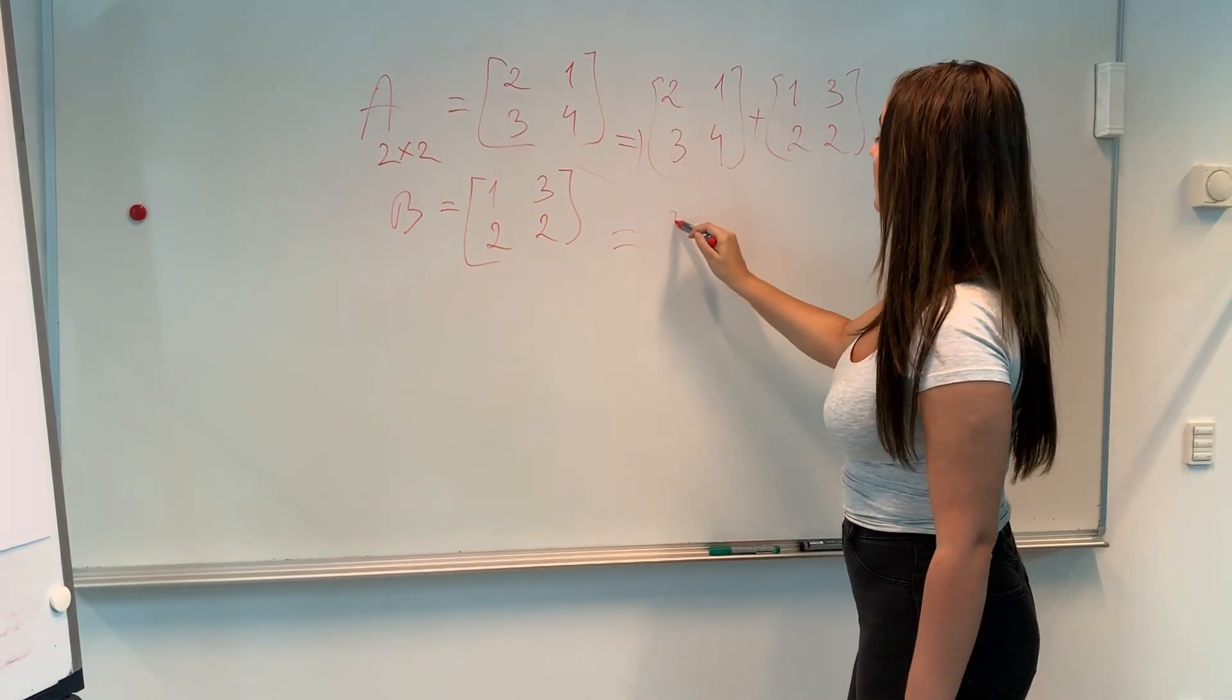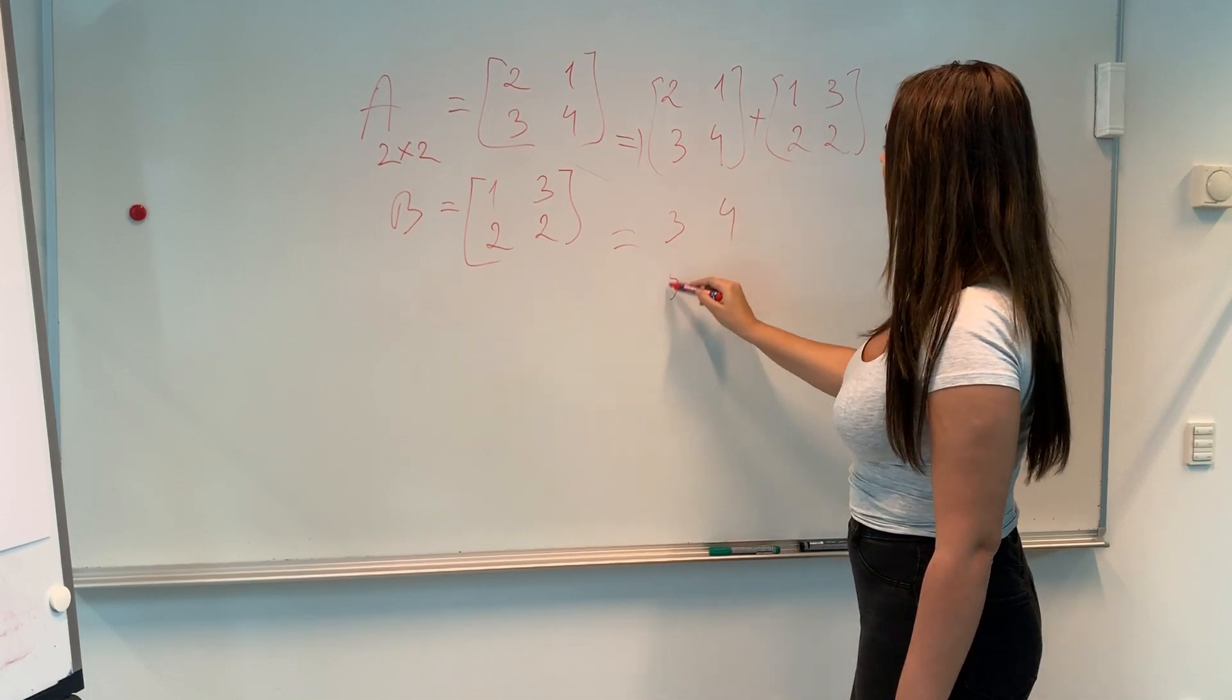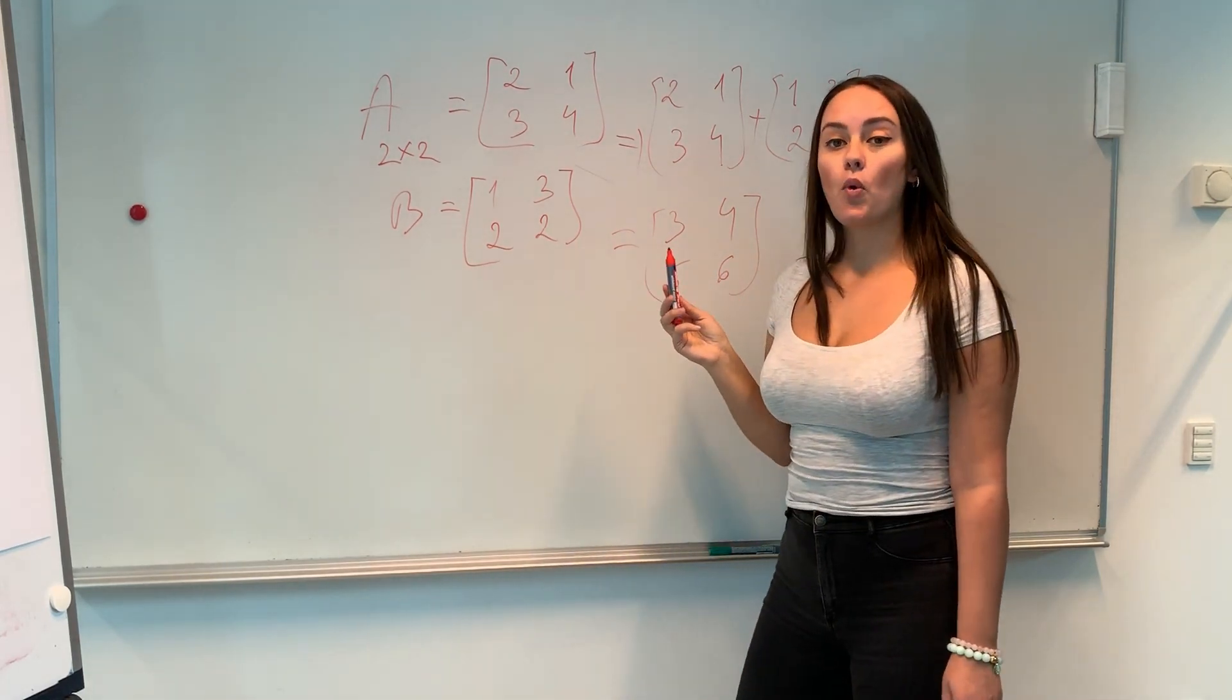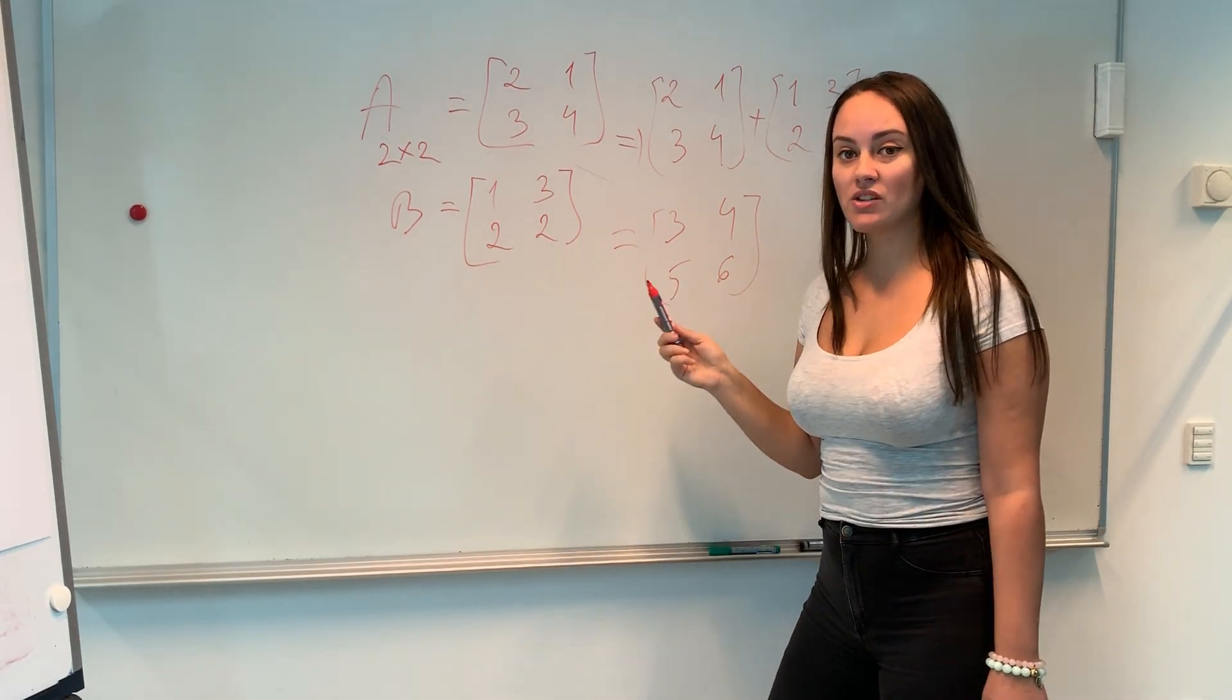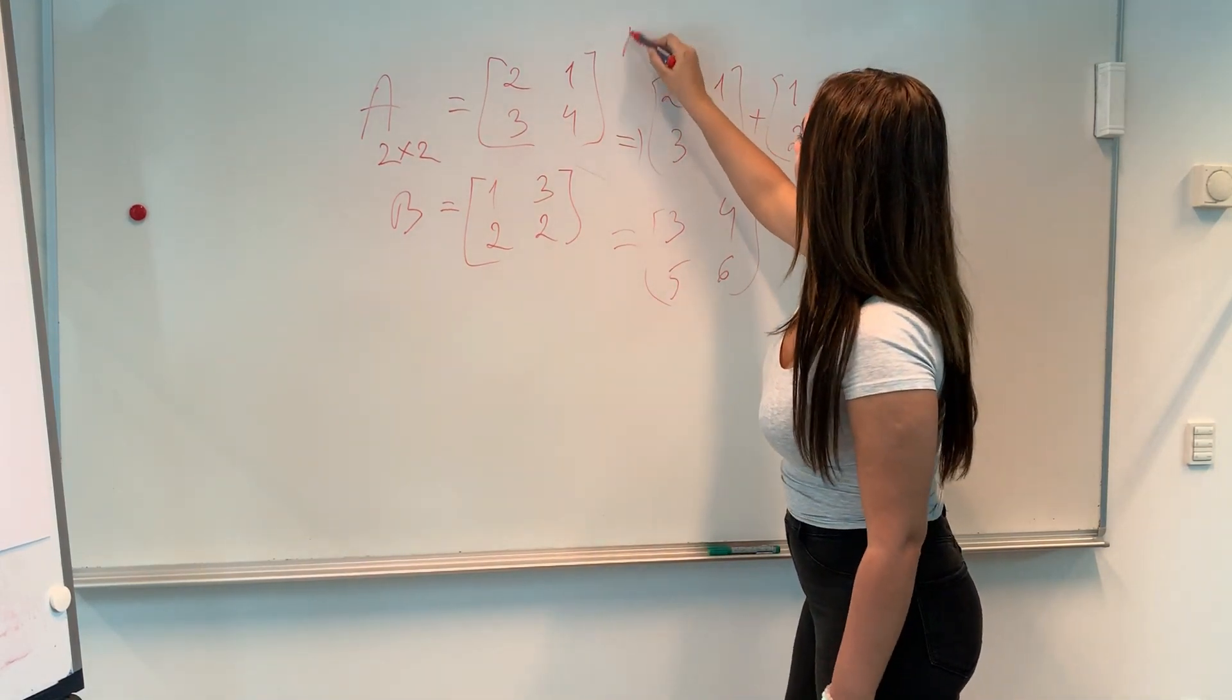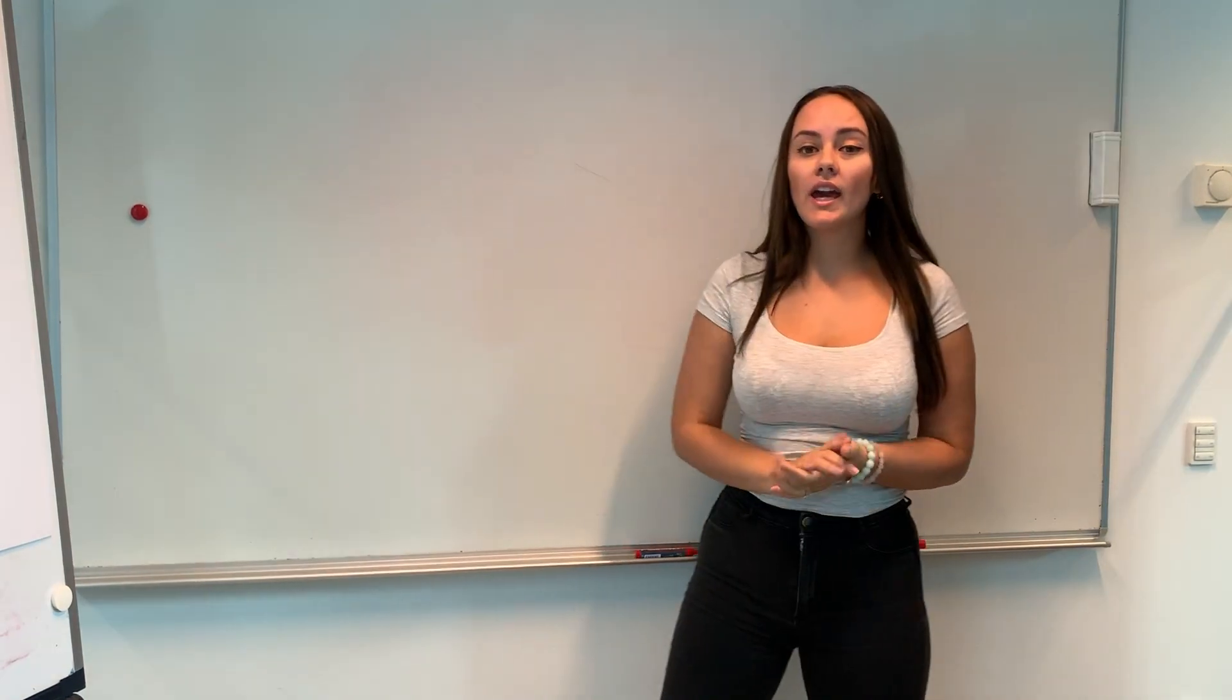So two plus one equals three. One plus three equals four. Three and two is five. Four and two is six. And one very important property of matrix addition is that it is commutative. So that means that A plus B equals B plus A.